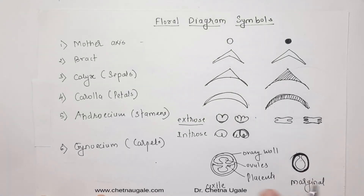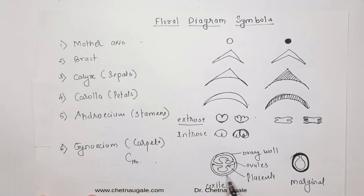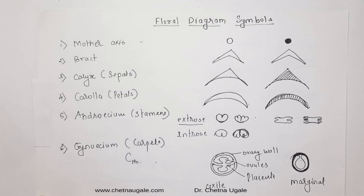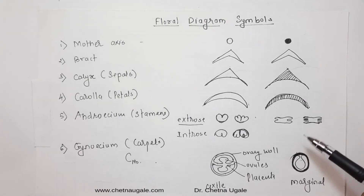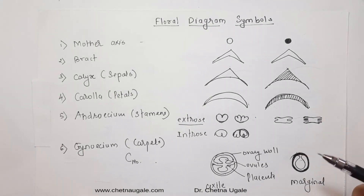Depending upon the number of carpels and their cohesion, the transverse section of the ovary varies in the floral diagram. These are the typical symbols used for the floral diagram.